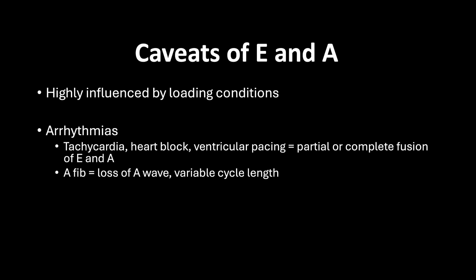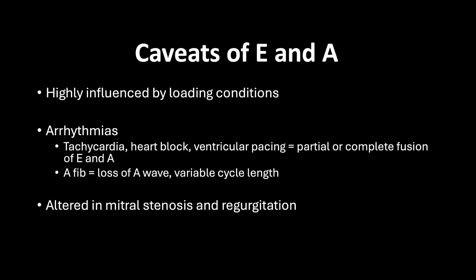Arrhythmias will lead to changes in E and A values, as they can cause partial or complete fusion of the waves. AFib results in loss of atrial contraction and thus no A-wave is present; due to variable cycle length, you need the average of at least 10 E-waves to calculate an E-value in AFib. Furthermore, mitral valve pathologies such as mitral regurgitation and mitral stenosis change the E and A waveforms, making these waves unreliable when such pathologies are present. Patients with certain conditions such as HOCM will also have different E and A values at baseline.